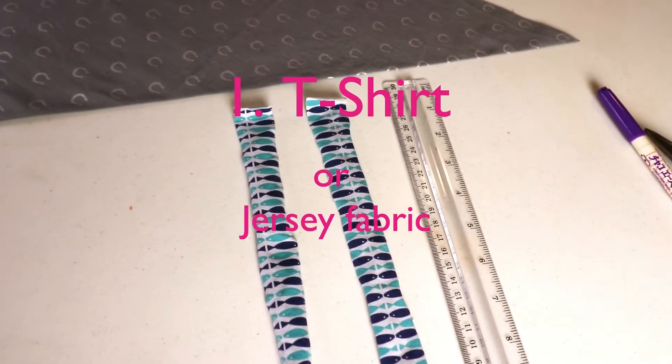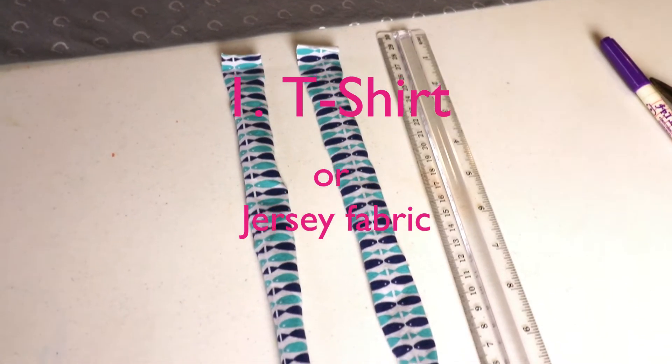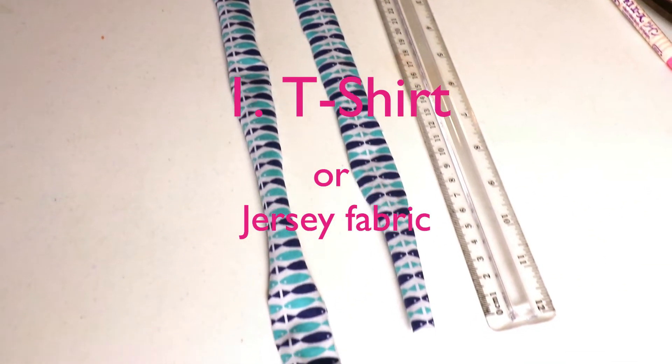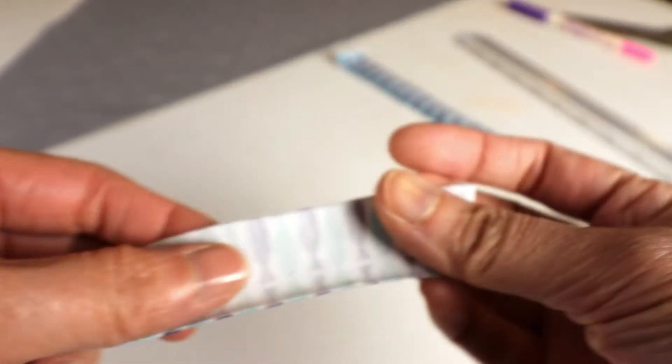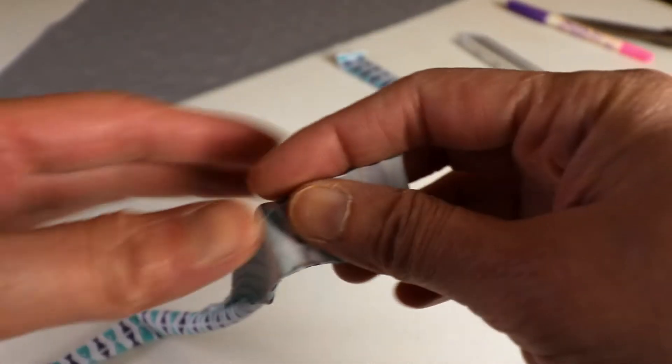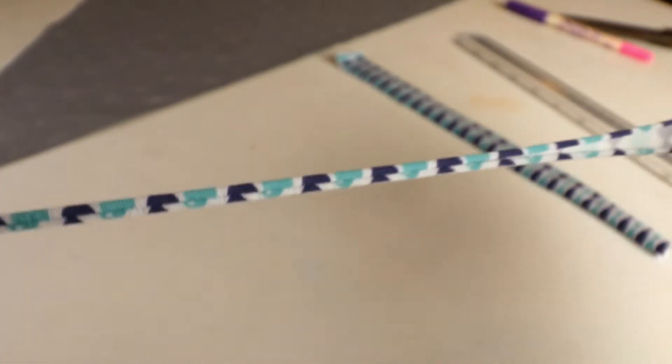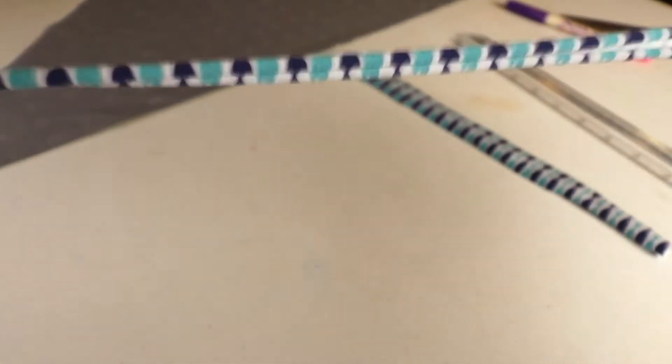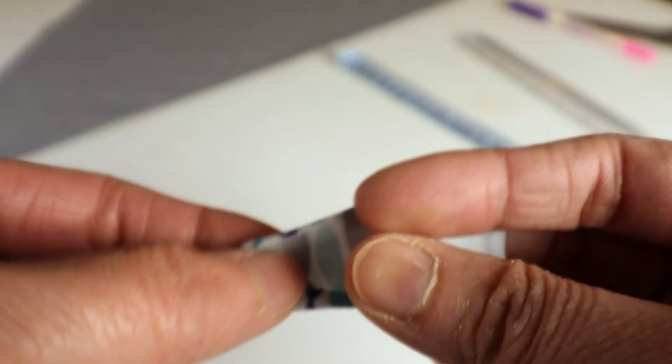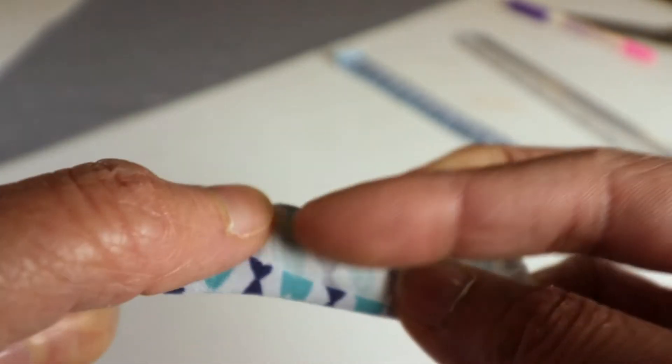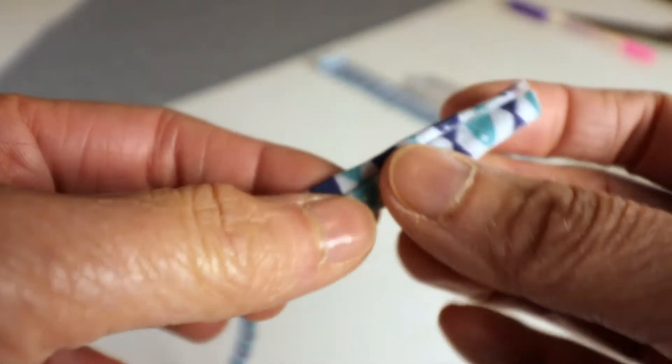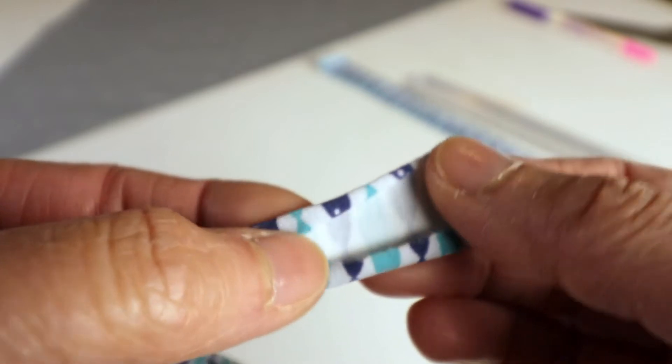The first choice is to cut off some t-shirt or jersey fabric. The jersey fabric is very stretchy so when you pull it tight it actually curves in and acts like an elastic because the jersey fabric will not fray so you don't need to finish with any sewing lines.